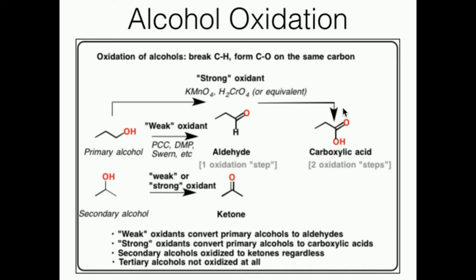Moving from left to right — from an alcohol to an aldehyde to a carboxylic acid — that's the direction of oxidation. Reduction is the reverse direction: going from a carboxylic acid to an aldehyde to an alcohol. Or in the bottom example, if we reduce a ketone to a secondary alcohol, that is a reduction. So oxidation goes to the right, whereas reduction goes to the left.